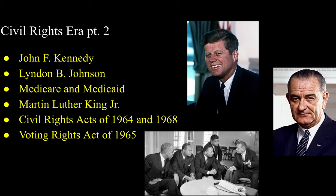During President Johnson's time in office, Congress passed many landmark pieces of legislation, including the Civil Rights Act of 1964, the Voting Rights Act of 1965, and the Civil Rights Act of 1968. During this time, many Southern Democrats began to switch parties and register as Republicans due to the liberal policies the Democratic Party was advocating.